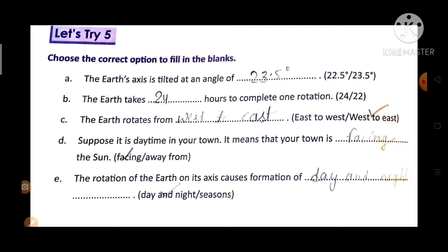The Earth's axis is tilted at 23.5 degrees. The Earth takes 24 hours to complete one rotation.